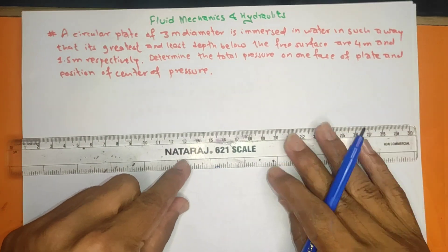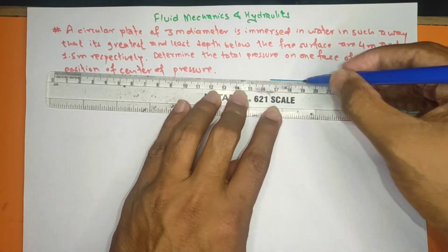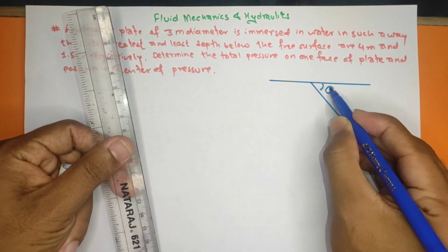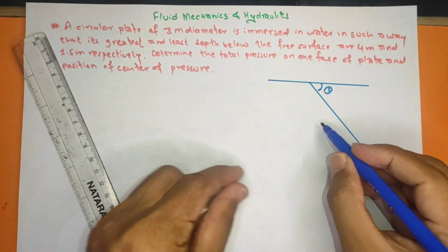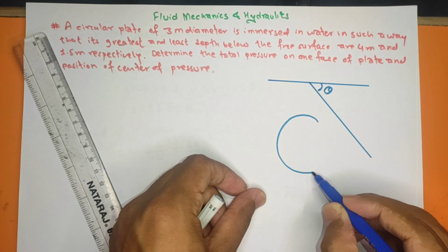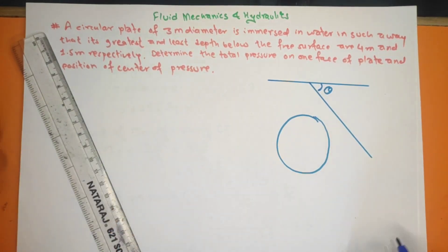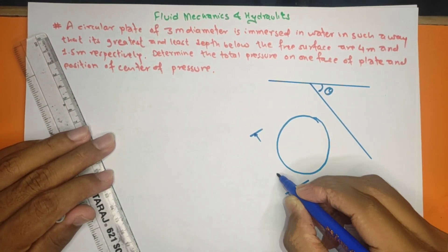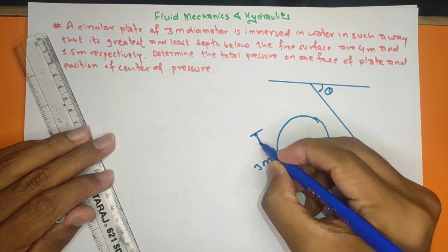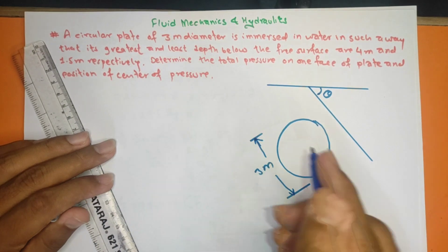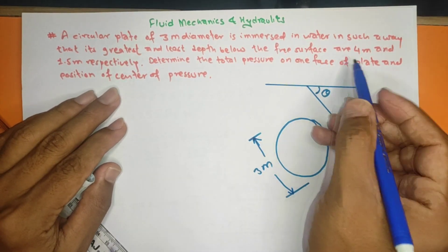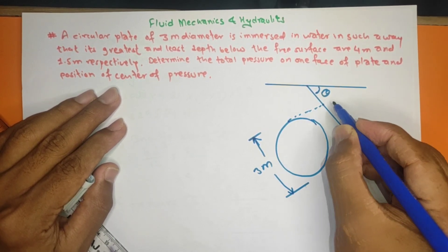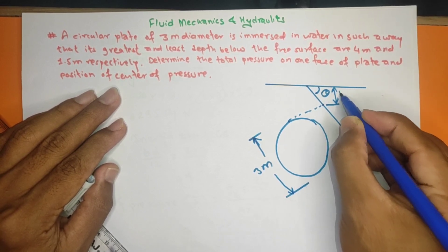For the solution, we first use the figure. We put the water surface at the top and draw the inclined circular plate below it, marking the incline angle. A circular plate is drawn with diameter 3 meters labeled.